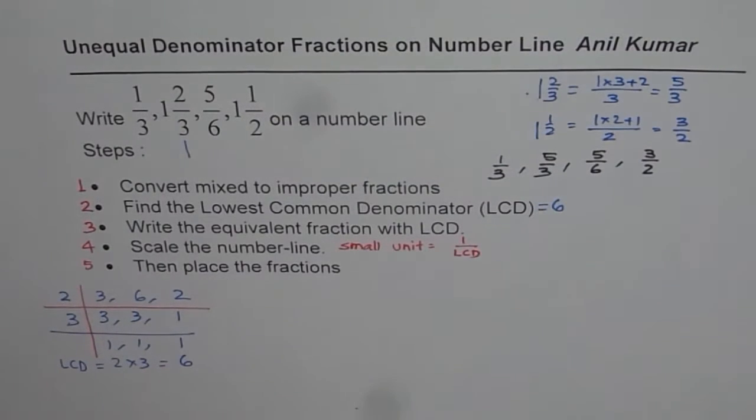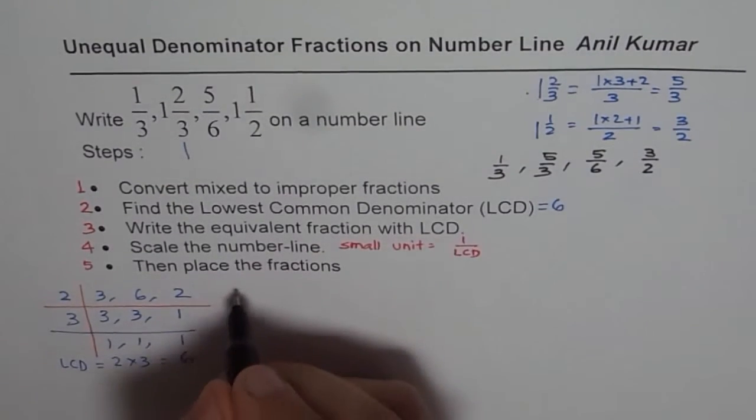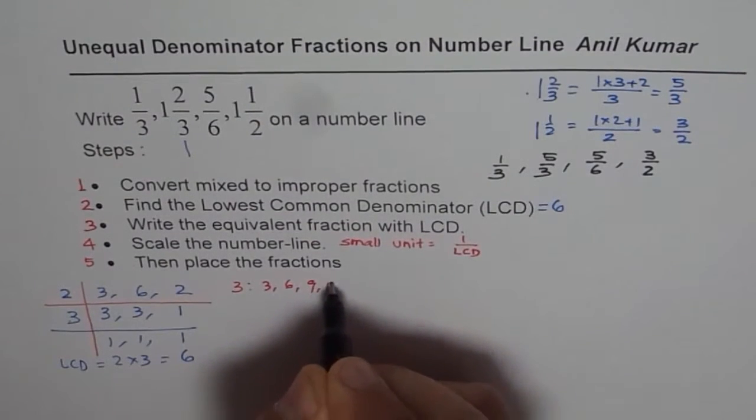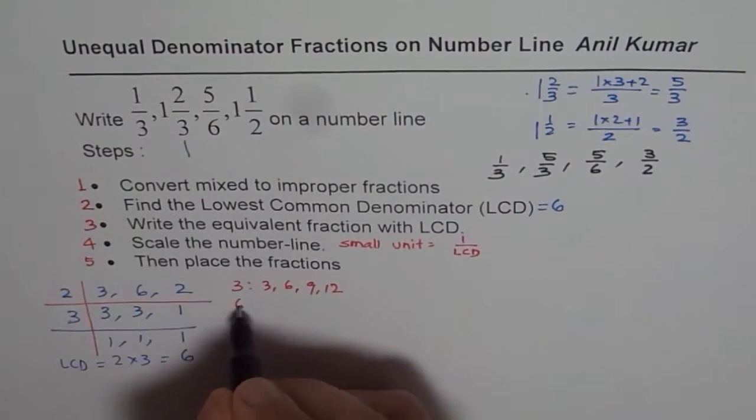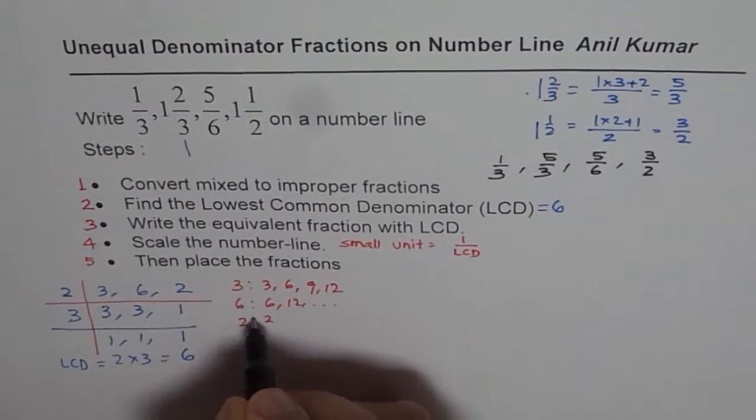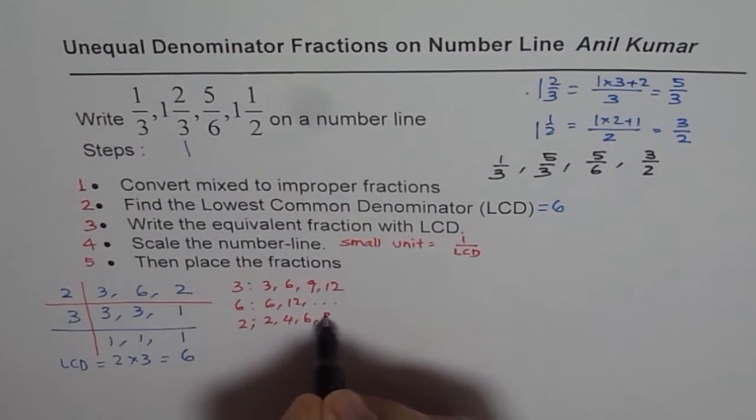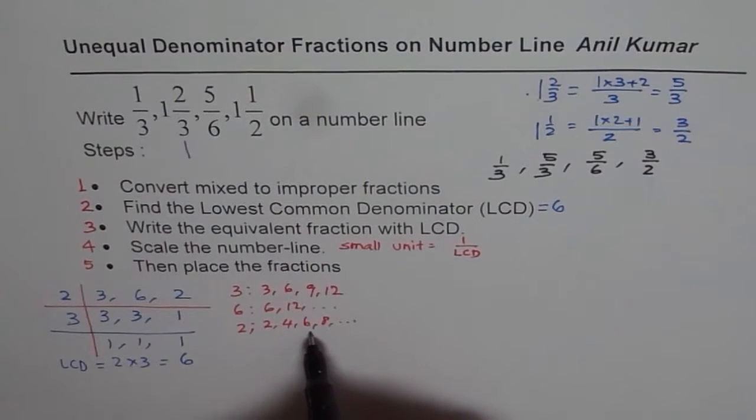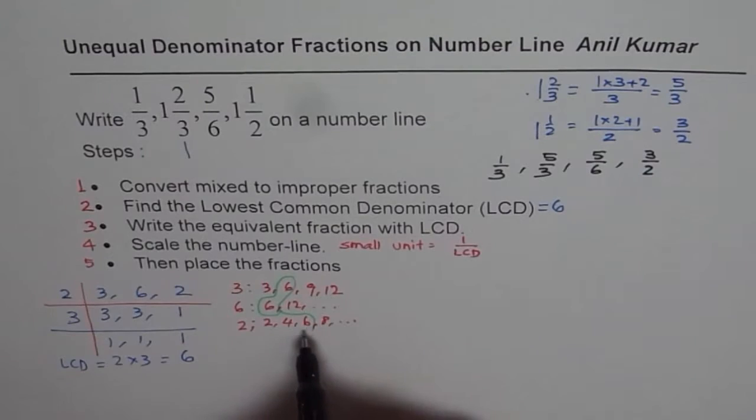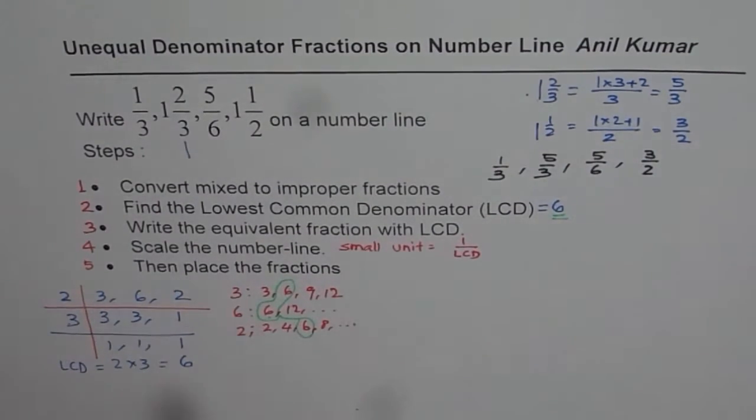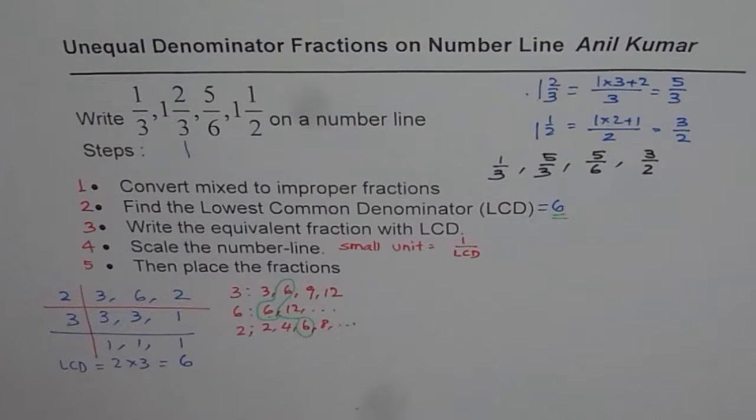The other way to do it is like this. You can write each number. So we have 3. Write multiples of 3. Multiples of 3 are 3, 6, 9, 12. Second number is 6. Write multiples of 6: 6, 12 and so on. And then 2. So we have 2, 4, 6, 8 and so on. Now from these, check what is common to all 3 of them. So you will find 6 being common. So 6 is common. So that makes 6 as your lowest common denominator. Adopt any of these methods to find the lowest common denominator.